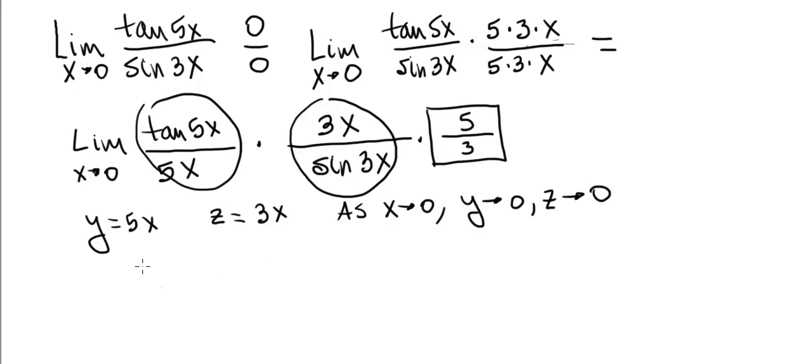The first part can be rewritten as the limit as y goes to 0 of tangent y divided by y. Now the second part over here, 3x over sine of 3x, let's write it like this.